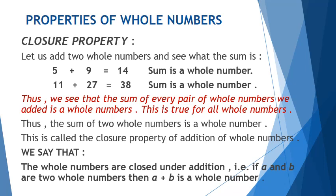Variable means they can have any value. For a, you can consider any whole number, and for b also, you can consider any whole number. So, when you add any two whole numbers, the answer is also a whole number — this is called the closure property.